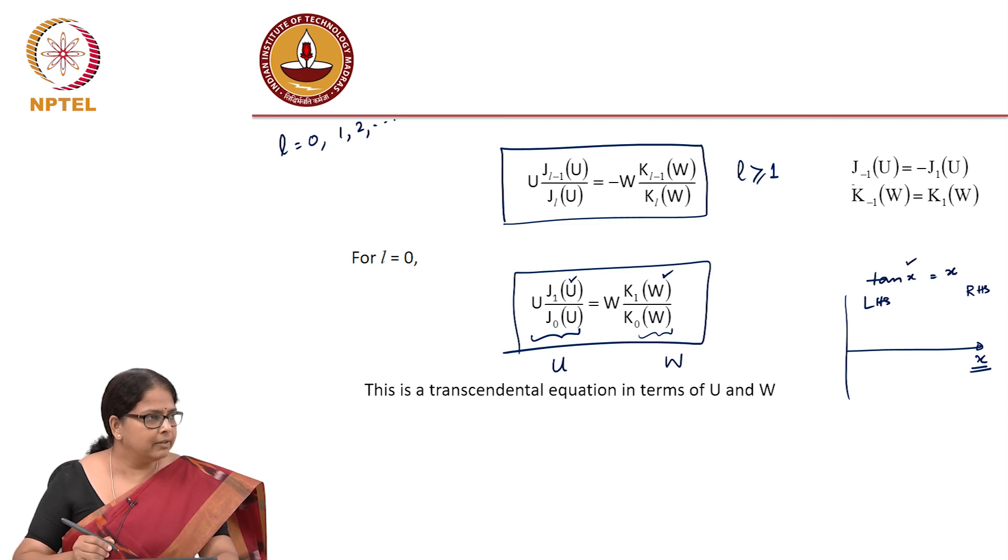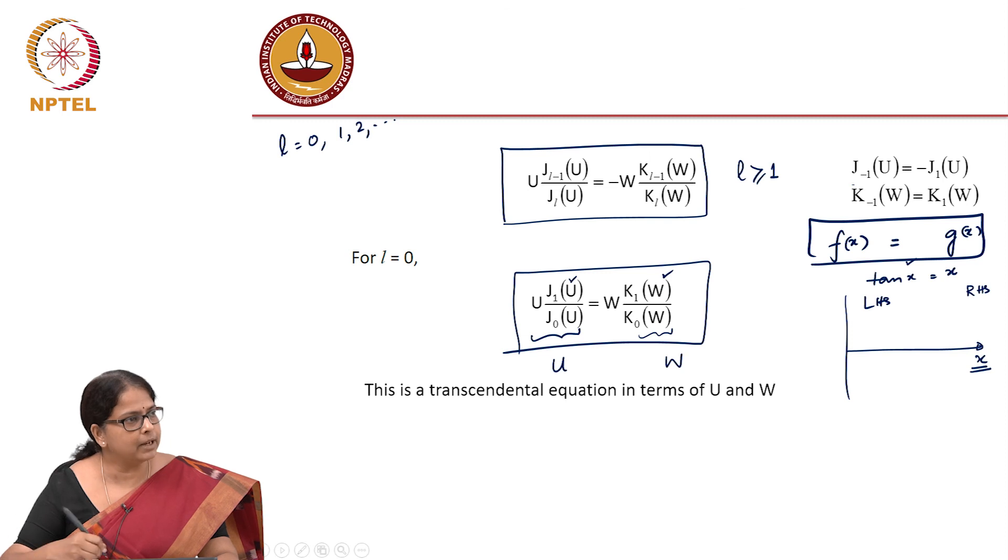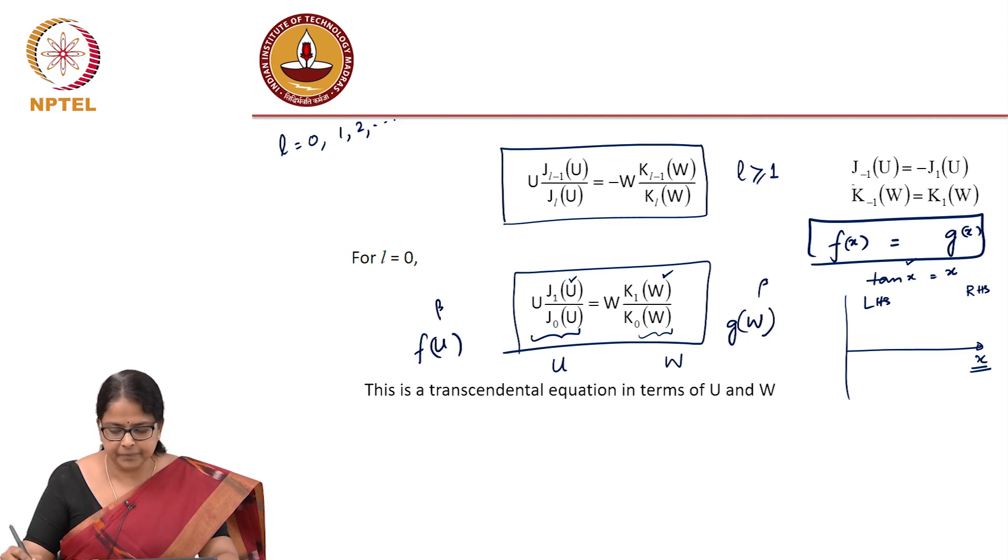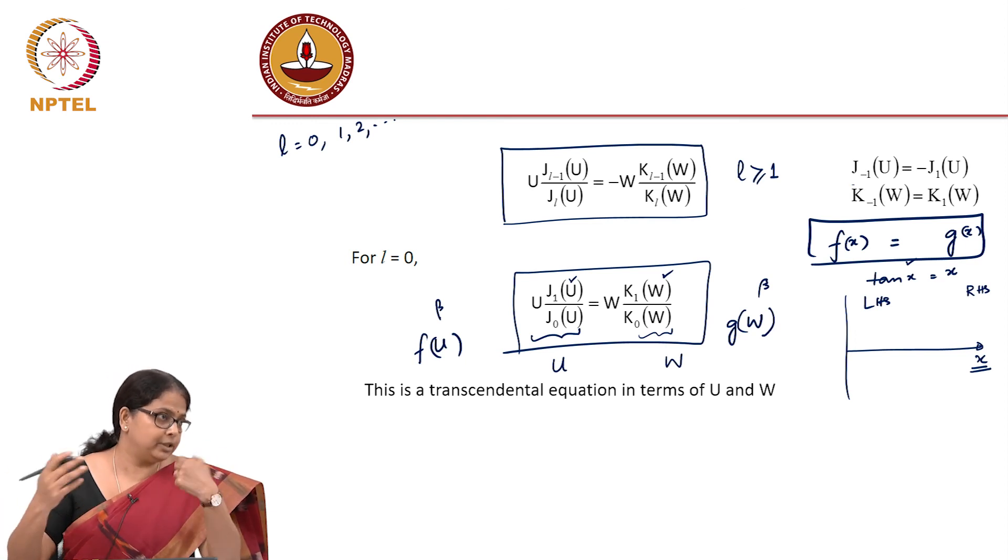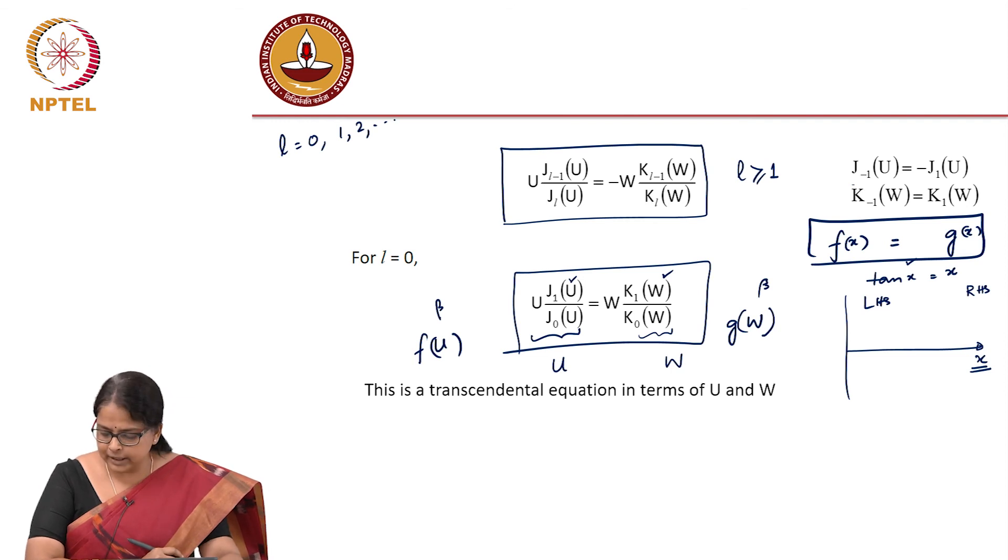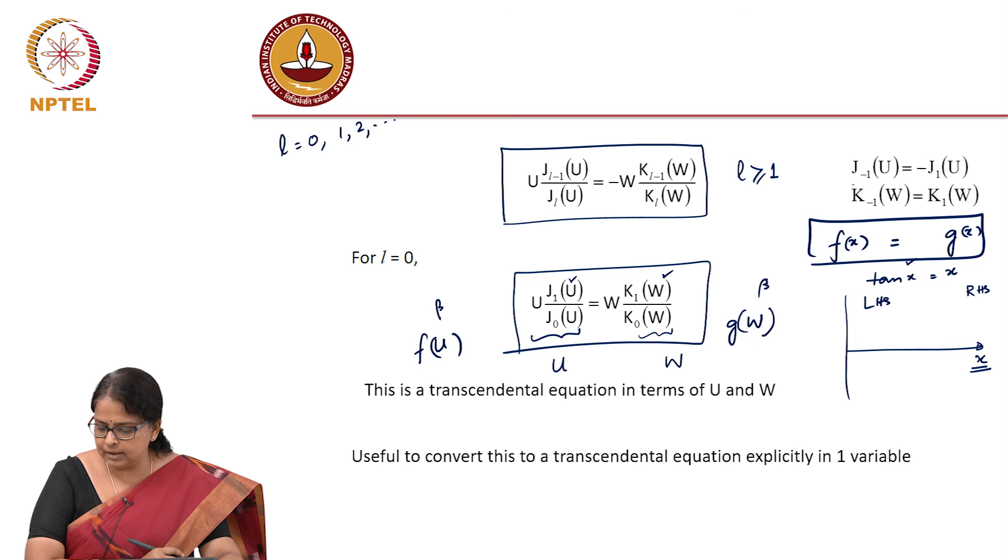You need to make sure that the left hand side and the right hand side is a function of the same variable before you can solve the transcendental equation. You have to get it to this form where the left hand side is a function of a variable, right hand side is another function of a variable. Then, if the variable is the same, then you can plot the LHS and plot the RHS and find out the value of x. As of now, it is not. Left side is a function of U, right side is a function of W. But both has β in it through a different form. So you have to kind of, and it is that β that you are trying to calculate. So the easier way of doing this is to convert this transcendental equation into a transcendental equation with this explicitly in only one variable.